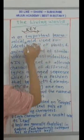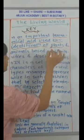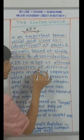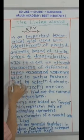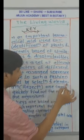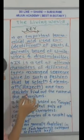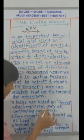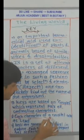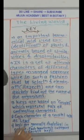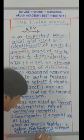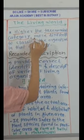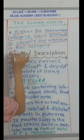Key: an important taxonomical aid used for identification of plants and animals based on similarities and dissimilarities. It is a set of alternate characters of different types arranged sequence-wise so that by selection and elimination, one can quickly find out the name of the organism. Keys are based on couplets, which represent a pair of contrasting characters. Each character of a couplet is called a lead. Keys are generally analytical in nature. Each taxonomic category has separate keys; the higher the taxonomical category, the more difficult it is to classify organisms in that category.